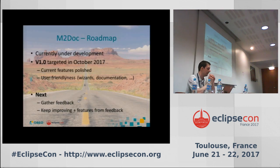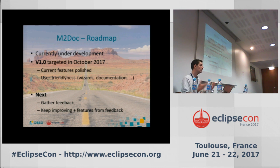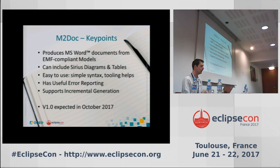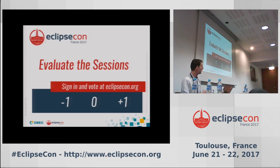The roadmap: M2Doc is currently under development. Version 1.0 is targeted for October. The scope is to finalize and polish the features shown, and work on user-friendliness so anyone can find the website, find the documentation, and write working templates easily. After that, feedback will be gathered and development will continue co-funded by the same actors. To summarize: M2Doc produces Word documents from EMF-compliant models, can include Sirius diagrams and tables, has good error reporting, supports incremental generation, and will be available in October. Thank you.